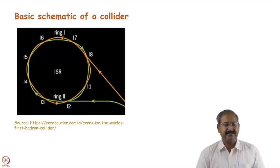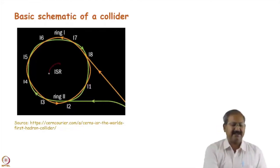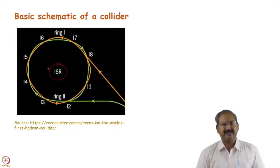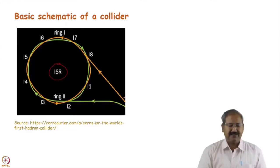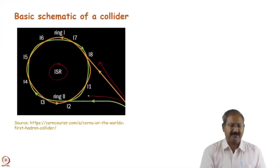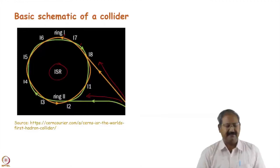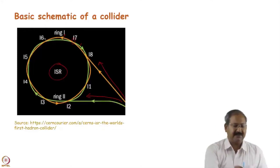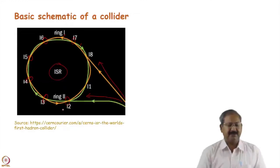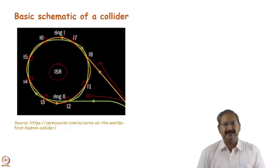Now how a collider actually looks: this is one of the basic schematics of intersecting storage rings. This was the first electron collider. The proton synchrotron beam is sent here, and the proton synchrotron also beams here, so there are two rings — one in green and one in the opposite — two completely independent accelerators. At certain points these two accelerator vacuum chambers cross each other, so at those locations collisions take place.